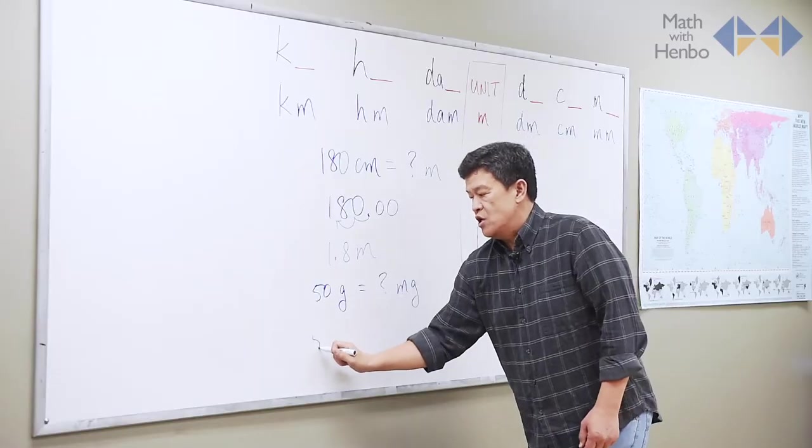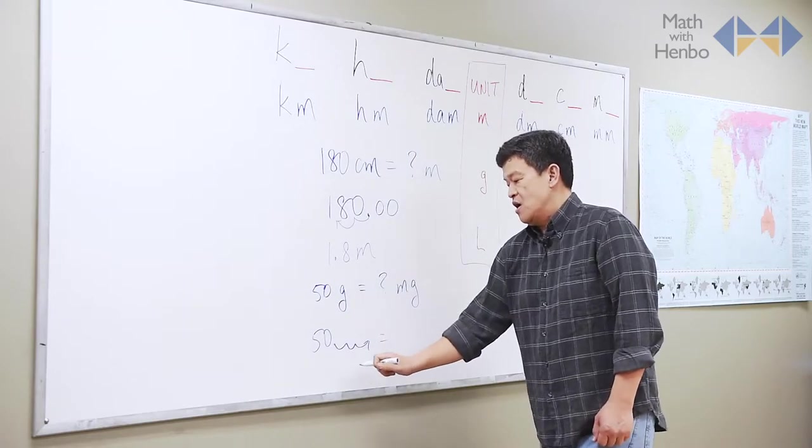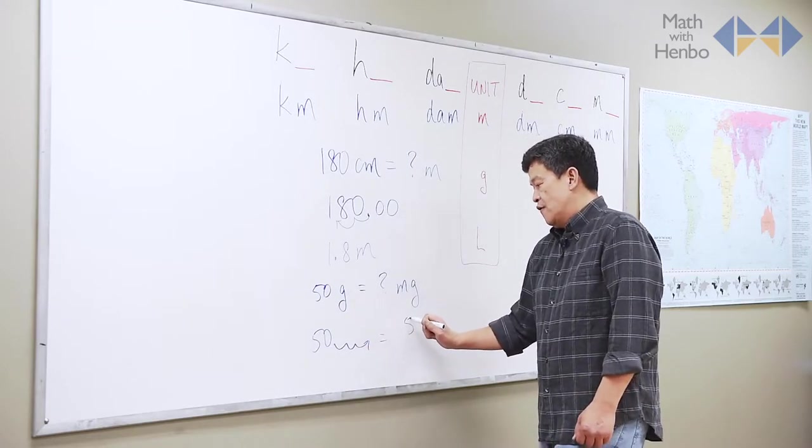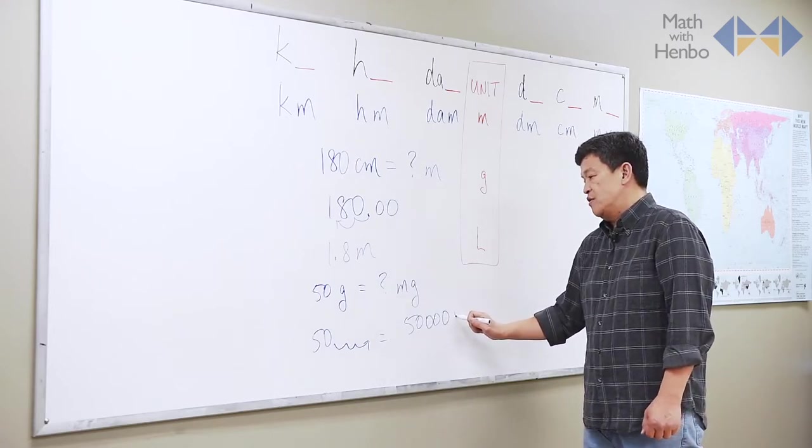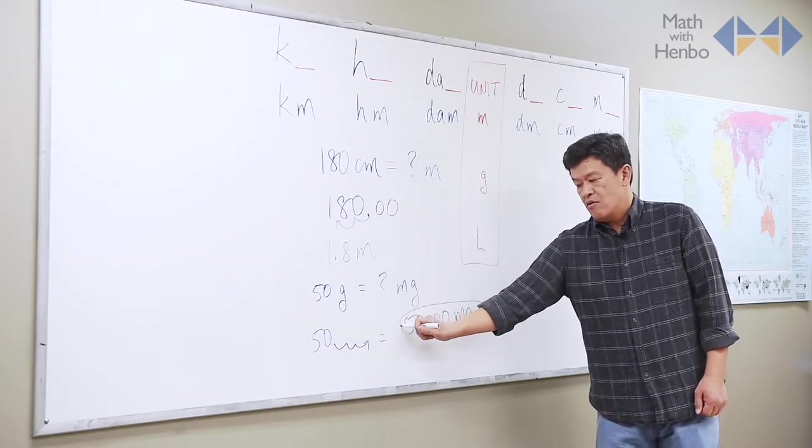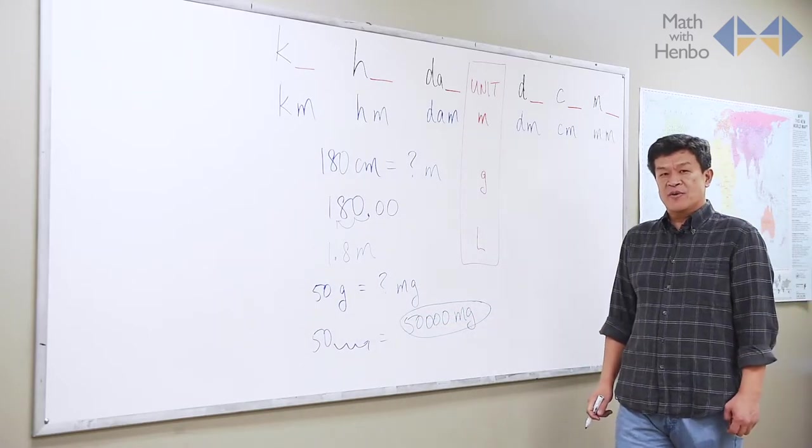Three to the right. So, 50, three jumps to the right, gives me 5-0, and then three zeros. And now, that's what I get. And that's how you do metric measurements.